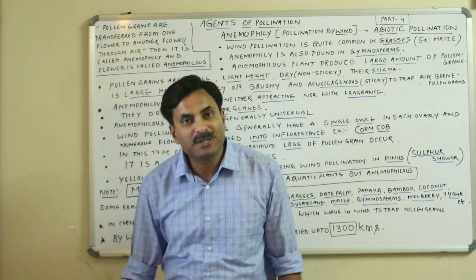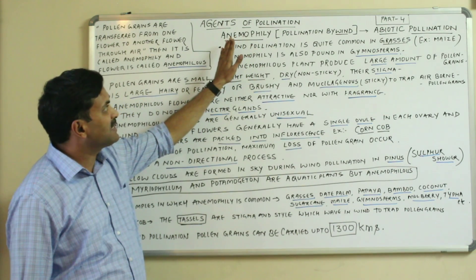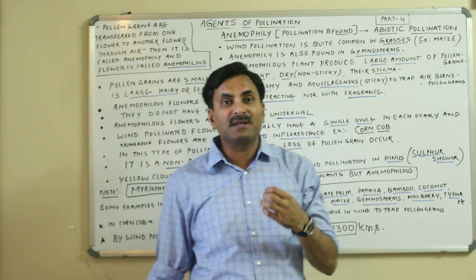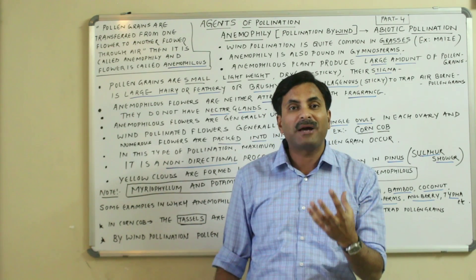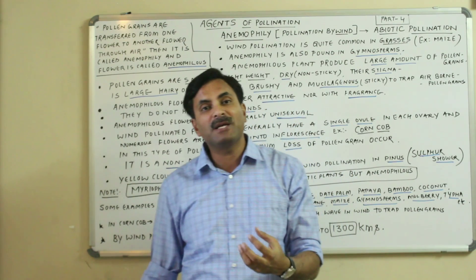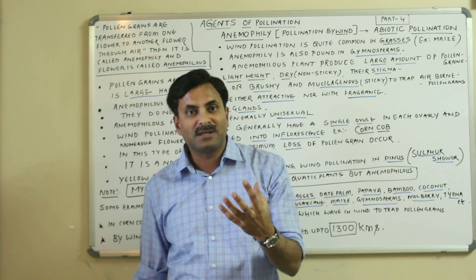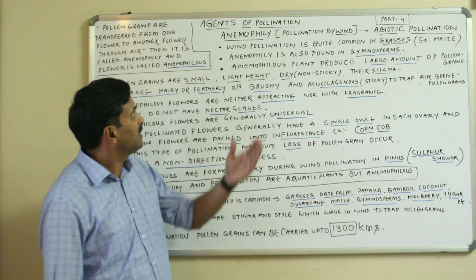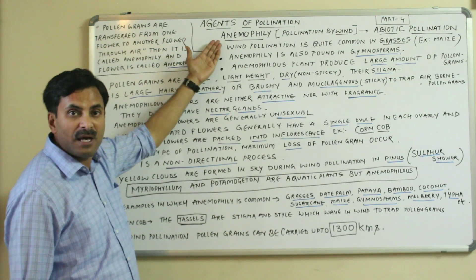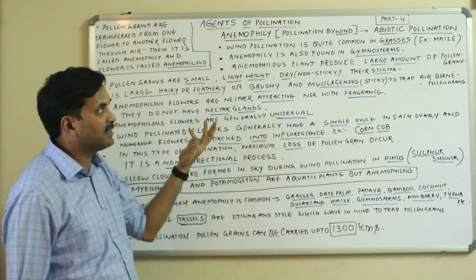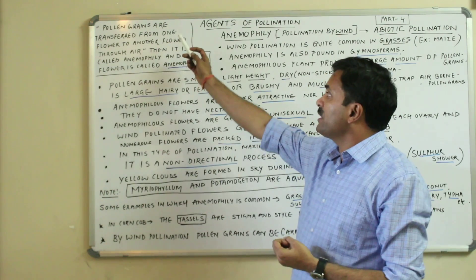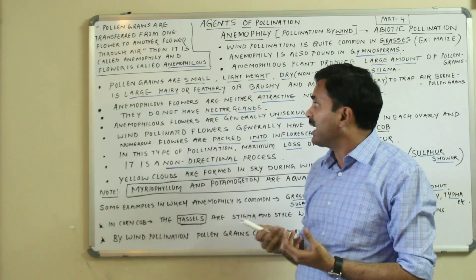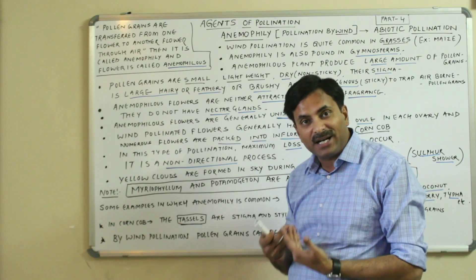Today we are going to discuss the agencies of pollination. As we know, pollen grains reach the stigma from the anther by various agencies, which may be biotic or abiotic agents. In abiotic pollination, wind plays a great role. We are going to study anemophily — pollination by wind — where pollen grains are transferred from one flower to another through the air.